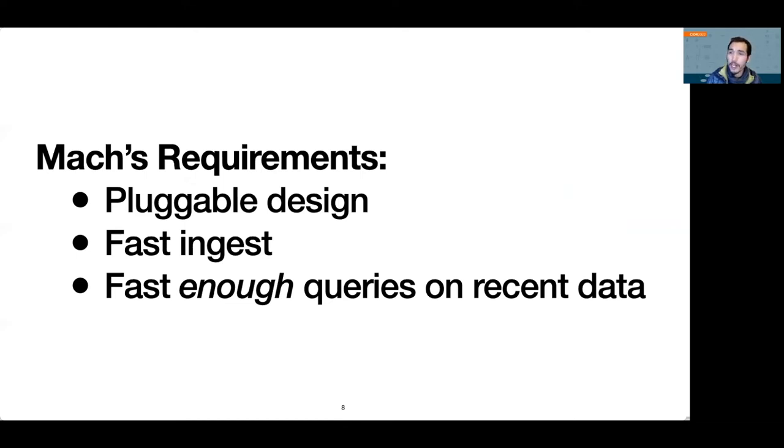Second, it should prioritize writes and ingestion, providing an API that encourages high write performance. Finally, it needs to provide fast enough queries on recent data. These requirements minimize time to insight, the time it takes to understand a complex system, by gathering higher data volumes with rich semantics from many heterogeneous applications, and providing fast access to recent data. We'll talk about the first two in this talk, and we refer you to our paper for the third.